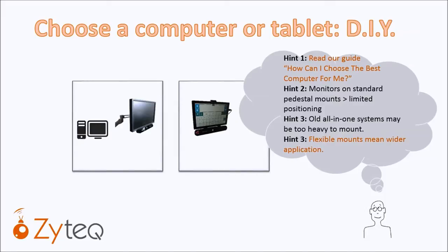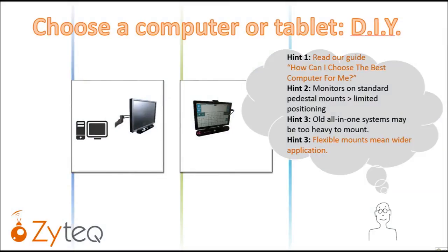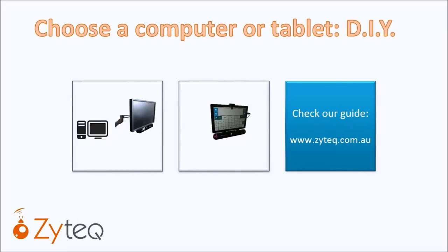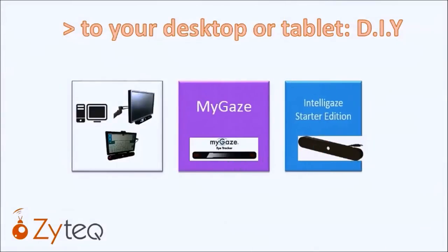If you're buying a Windows tablet, avoid the 10-inch screens as these are generally too small for the eye gaze targets needed at the early learning level. Windows tablets can be mounted on the specialised mounts, which provides a wider range of positioning options so that the system can be used with the largest number of students. The additional cost of the mount may be well worthwhile. If you have an old all-in-one system you're considering using, check the weight of it against the specifications of the mount.